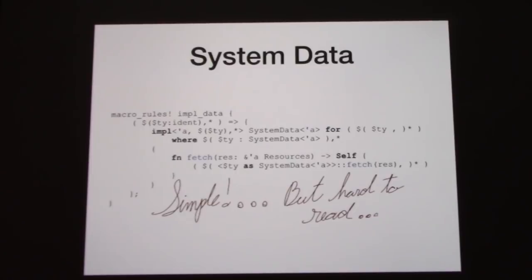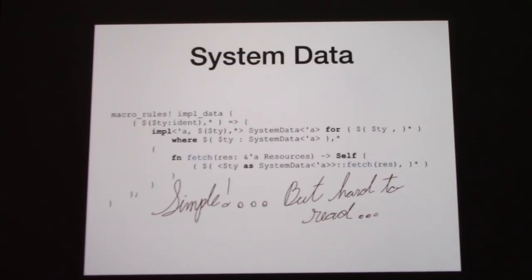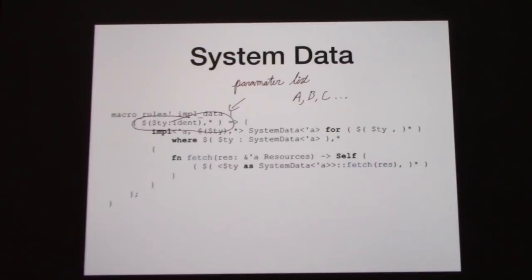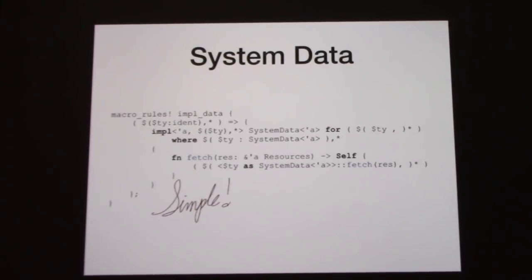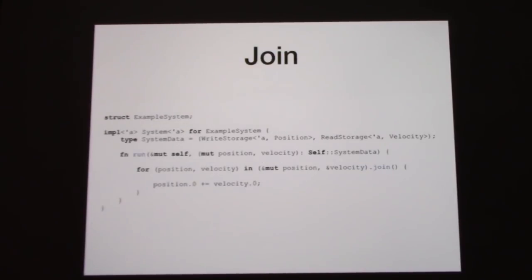The macro system in Rust is known to be pretty much the ugliest thing in the world — it's best to avoid it, but there are certain circumstances where it's just so much nicer. For the record, all of this ugliness is not exposed to the user; it's hidden in the bowels of the entity component system.